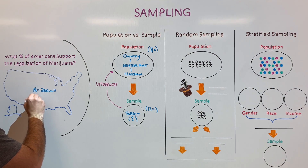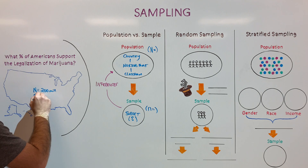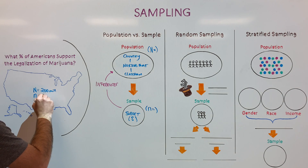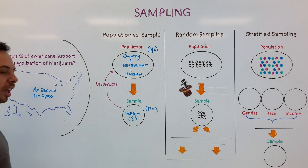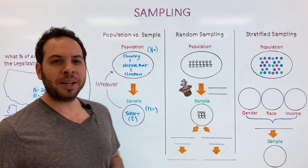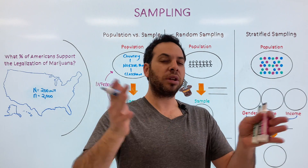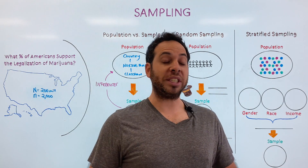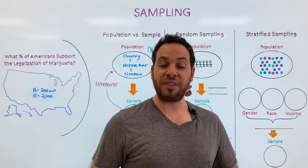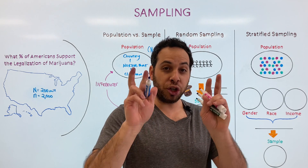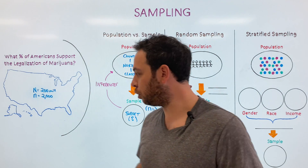Our lowercase n — our sample — we're going to say is about 2,000 people. You might be thinking: can you really have 2,000 people and generalize your results to an entire country? Well, you can, if it's a good sample. What 'good' means we will cover in the next few moments.